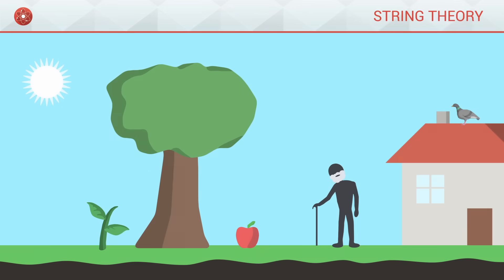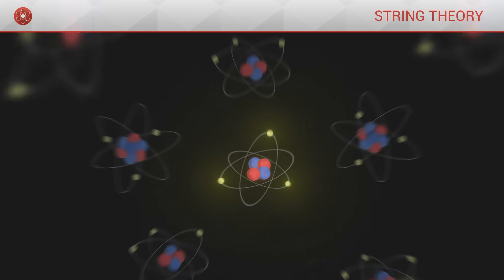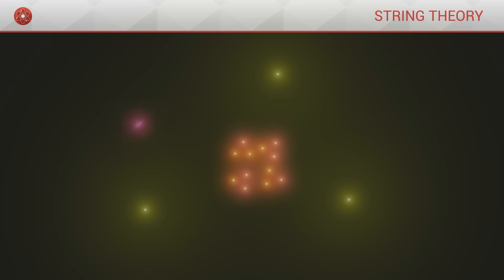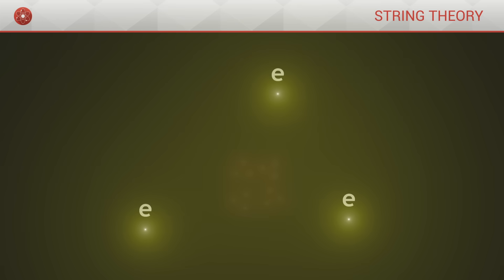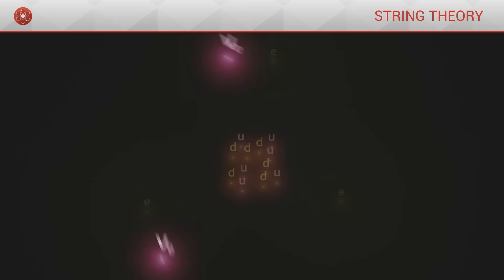Our universe contains matter, which when we look closer is made up of particles. There are different types of particles: electrons, quarks, or neutrinos.